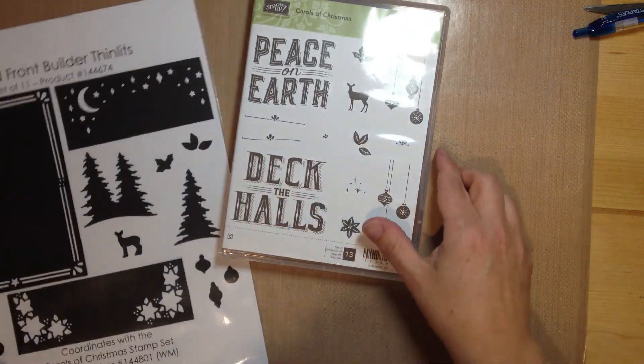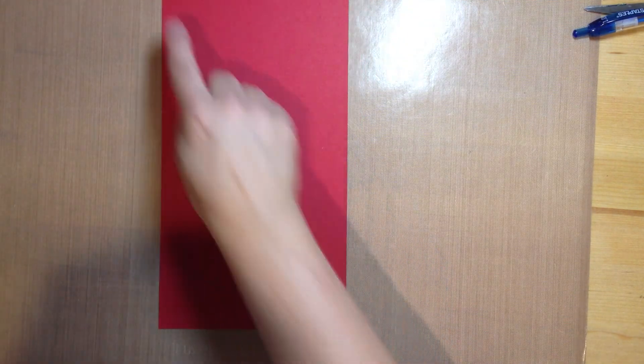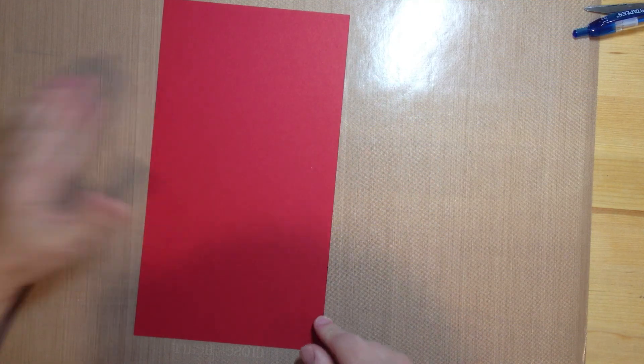But for today I am just focusing on the stamp set. So what we are starting with is a piece of cardstock that measures 5 1/8 inch by 9 1/4 inches. And I am using red for this one.